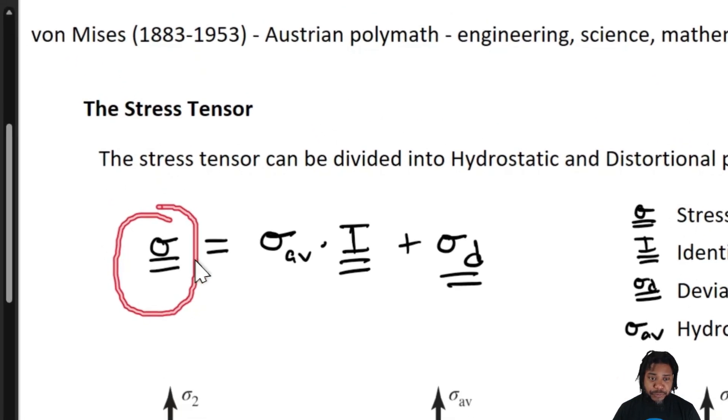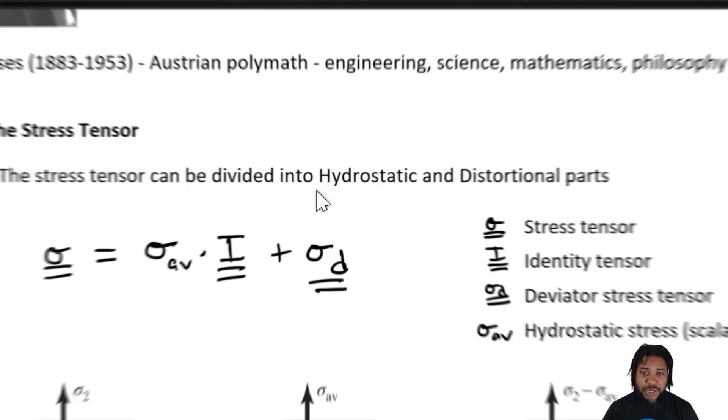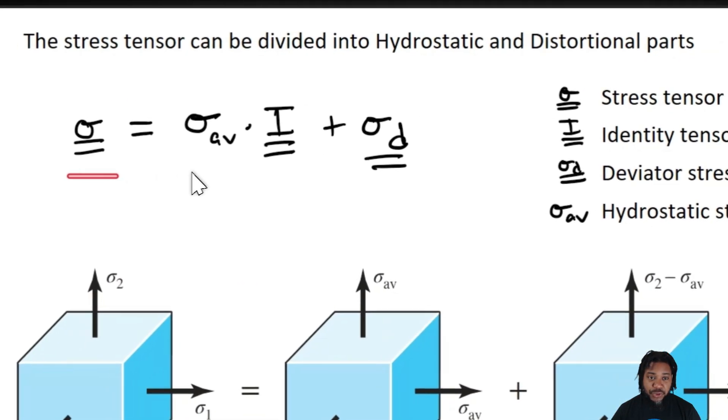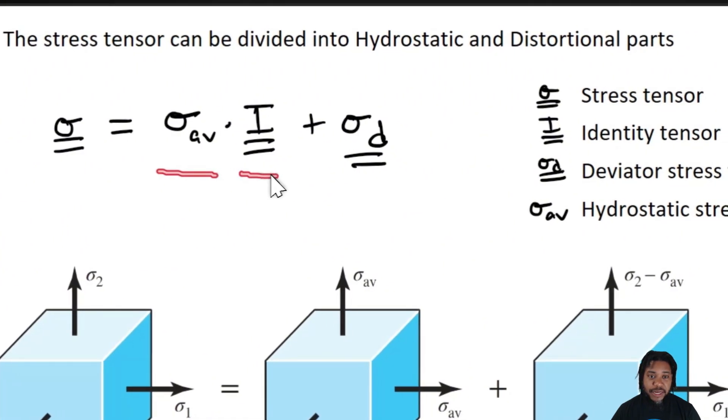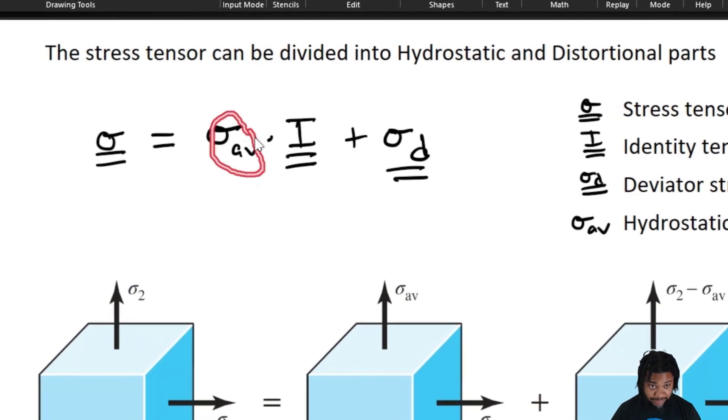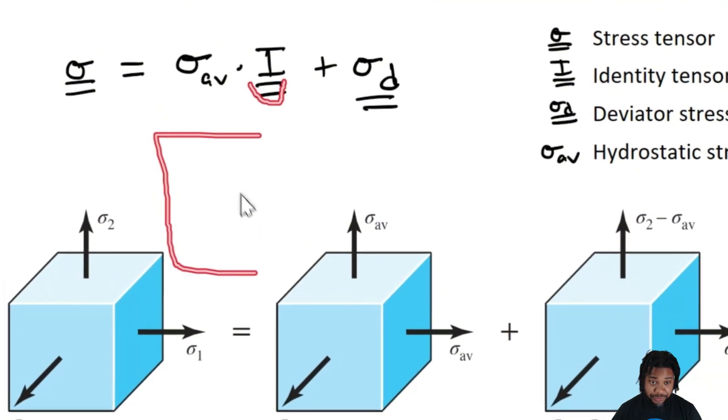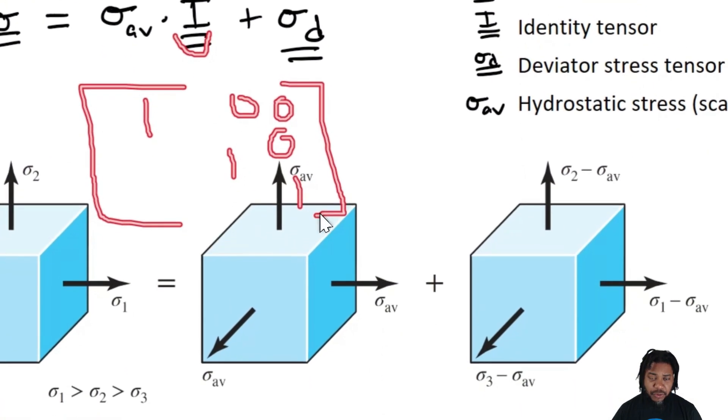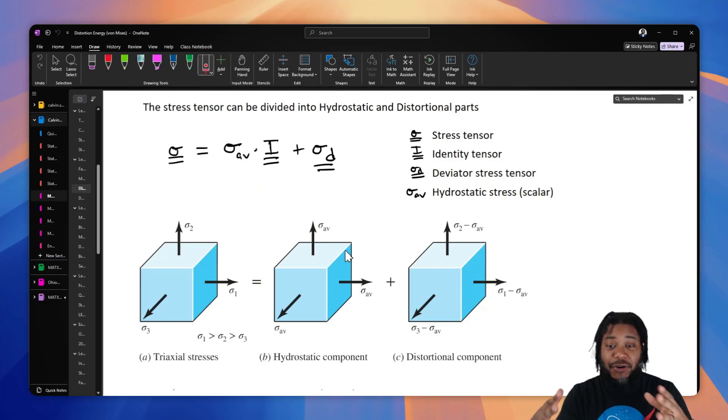That tensor, sigma, can be divided into two components: one that's involved in change in the volume of a structure, and a distortional portion, which is involved in the change in shape of a volume. We can divide it as follows: the stress tensor is equal to the average normal stress times an identity matrix plus a deviatoric stress tensor, right? Where the average normal stress is a scalar, the identity tensor is just a matrix with ones in the diagonal and zeros everywhere else.